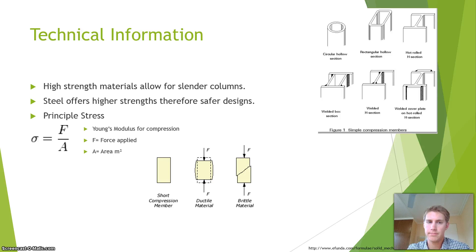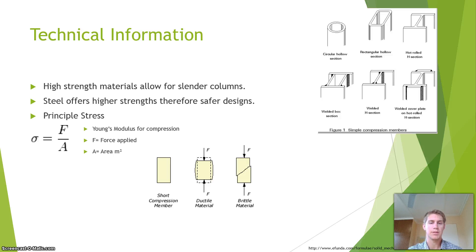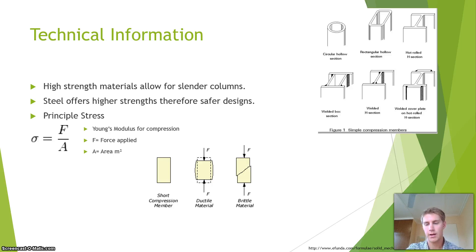The slenderness ratio relates to the strength of the material. Because of steel having such a high strength, it can be a slender column — steel's higher strength therefore allows a safer design. There are a few different designs of steel columns: H or I beams, hollow rectangle or circular sections. To test the stress of a column, you use Young's modulus of compression — the force applied over the area in square meters. Ductile materials will bloat and sometimes crumble under failure, while brittle materials will have a shear crack through them if failing. Shorter columns will be stronger.